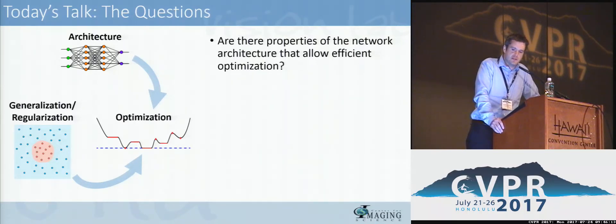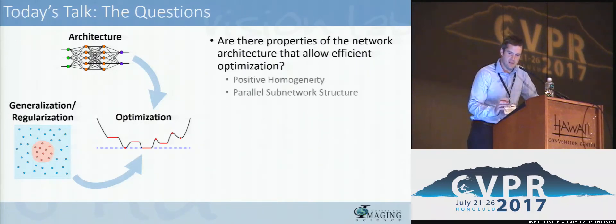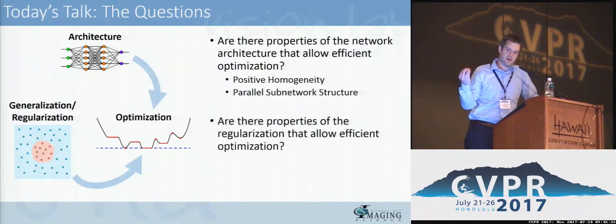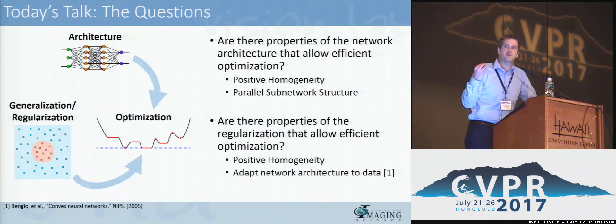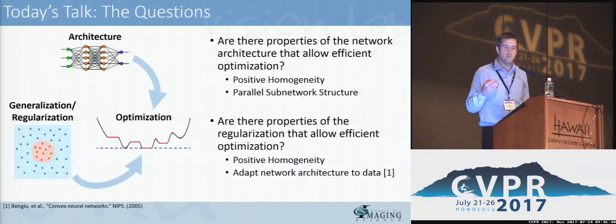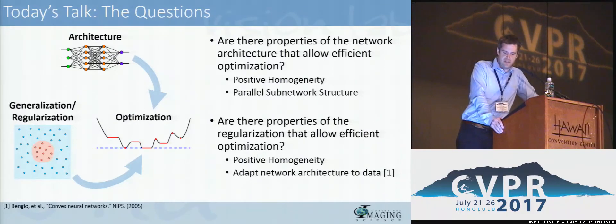The main question we're going to ask is: are there properties of the neural network architecture that allow for efficient optimization? The answer is yes, and these properties we're going to call positive homogeneity and having parallel subnetwork structure. We'll also ask whether properties of regularization can allow for efficient optimization — again, positive homogeneity is key. We're going to allow the architecture to be adapted to the data via regularization, building on and generalizing ideas originally proposed by Yoshua Bengio and colleagues in 2005.